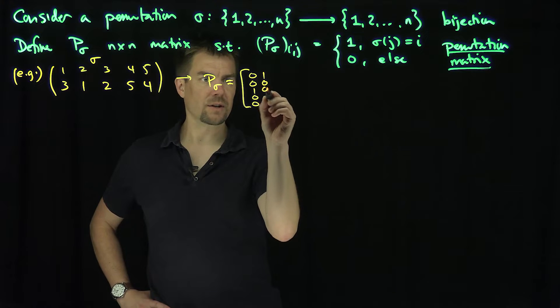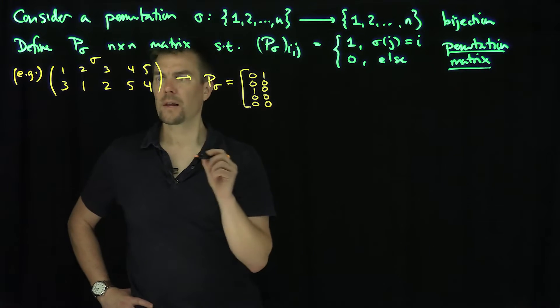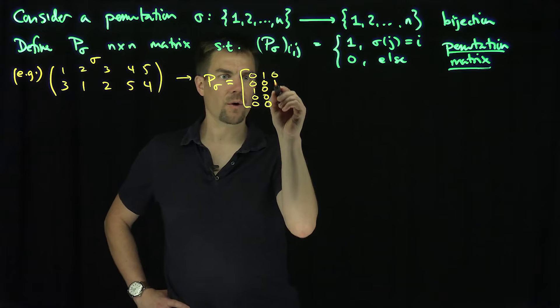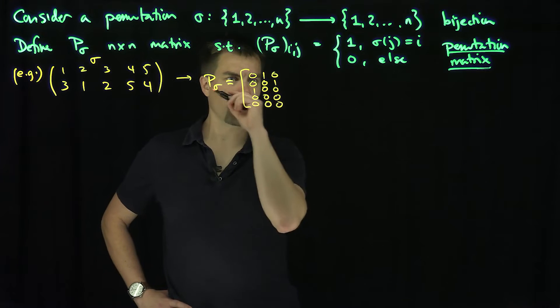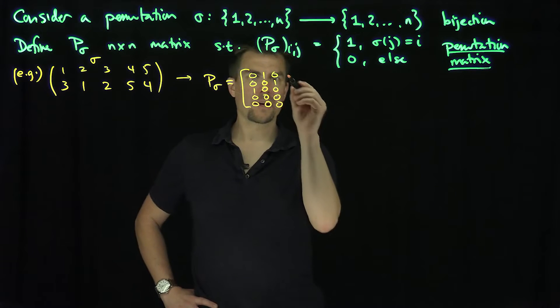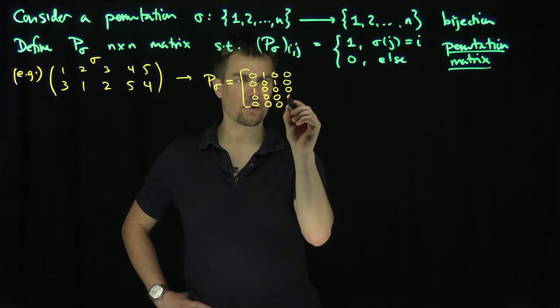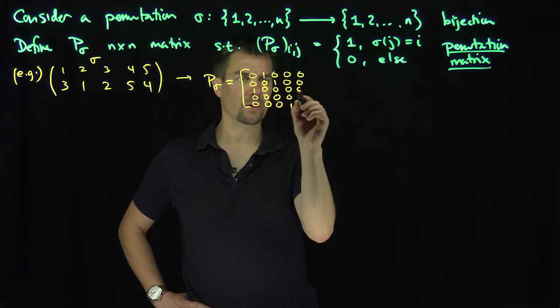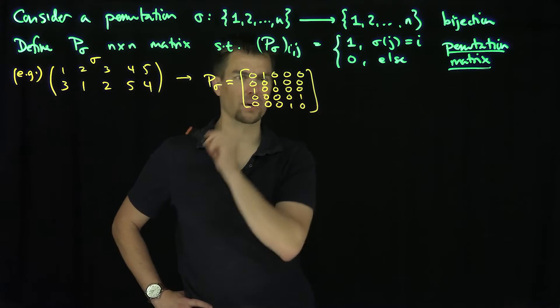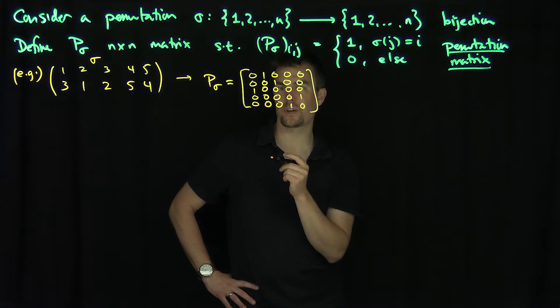Likewise, I get a 1, a 0, a 0, a 0, and a 0. Then the 3 goes to 2, so I get a 0, a 1, a 0, a 0, and a 0. Then we'll get a 0, 0, 0, 0, 1. Then a 0, 0, 0, 1, 0, like so. So that would be this permutation matrix.